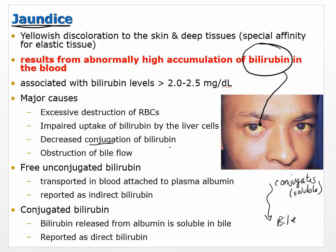Free unconjugated bilirubin is transported in the blood attached to plasma albumin, reported as indirect bilirubin. Conjugated bilirubin is released from albumin as it becomes soluble in bile. Remember that bilirubin is made from broken-down blood cells — the heme group in blood cells is chemically converted to bilirubin. You can see bilirubin not just with jaundice, but when a bruise is healing — it starts as purple, and as blood cells are broken down, it forms bilirubin in that area, causing the yellowing of bruises.